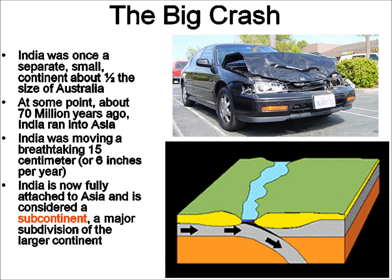Previously we had talked about how Pangea had split up and how the different continents were moving about the world. India was originally a continent about half the size of Australia. About 70 million years ago it ran into Asia. In the picture here you see the hood of the car buckled up — the same thing happened when India hit Asia. The land buckled up and formed mountains. India was going about 6 inches per year, which doesn't sound like much, but when you've got the weight of a whole continent behind it, that is a huge impact.